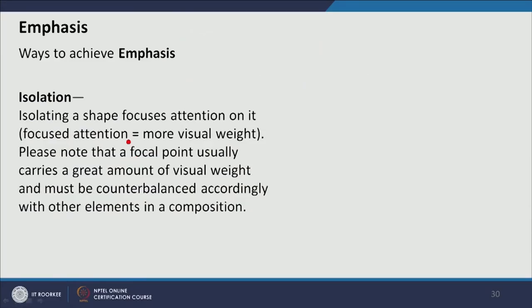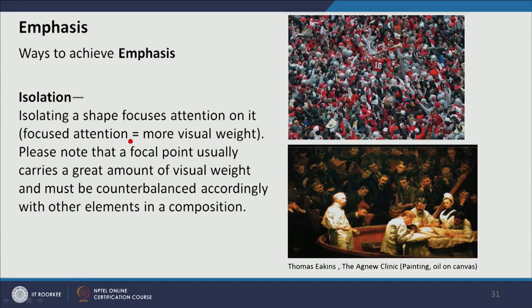The next principle of design is emphasis — creating a focal point is very important in the composition. If we do not create a focal point, the composition just acts as a texture with no area of visual interest. To do that we have to create a hierarchy inside a composition. The first way of achieving emphasis is isolation. If we isolate a particular element from the composition, it gains prominence in the hierarchy. For example, in the first photograph, the distribution of color and texture is absolutely even, so the photograph acts as a texture.